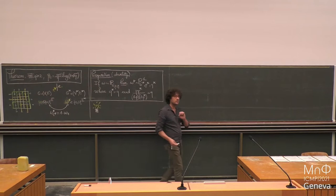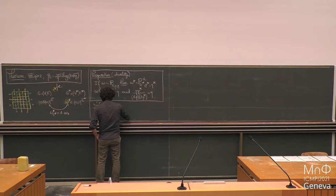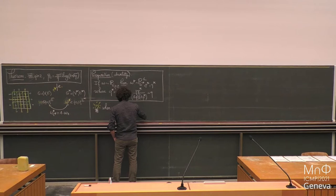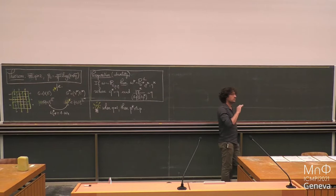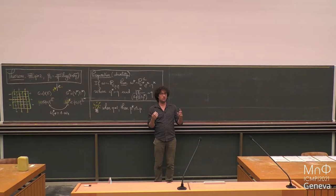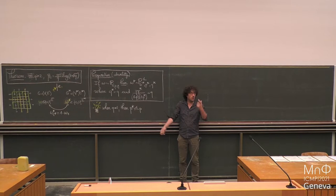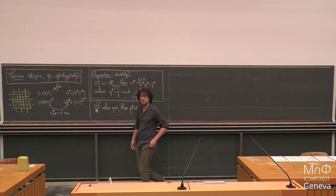When q equals 1, q* is also equal to 1, and p* takes a very easy form: p·p* over (1-p)·(1-p*) equals 1, which just gives p* equals 1-p. What this proposition claims in this specific case is that if you start from Bernoulli percolation — where you toss a coin independently for every edge and every edge is open with probability p — then the dual configuration is also a Bernoulli percolation with parameter 1-p. This is completely obvious because it's just the reverse procedure: if it's tails you put the edge, and if it's heads you don't.